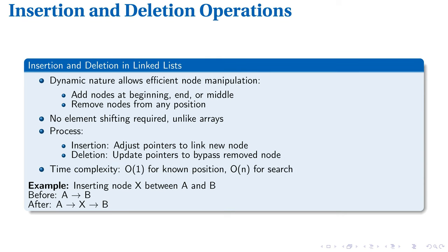Inserting and deleting nodes in linked lists is straightforward. To add a new node, we adjust pointers. For instance, when inserting node X between A and B, we set X's next pointer to B, then change A's next pointer to X. This creates the sequence A, X, B without moving other elements. Deletion works similarly — to remove node B from A, B, C, we update A's next pointer to C, effectively bypassing B. These operations have O(1) time complexity when the position is known, as we only update a few pointers.